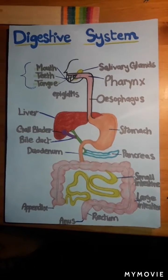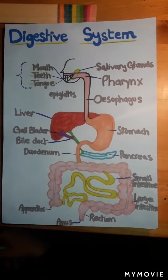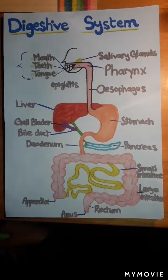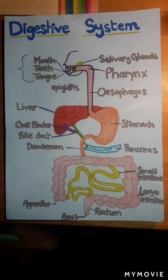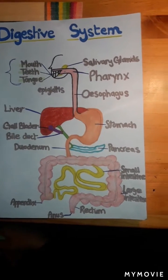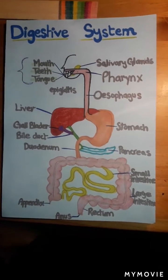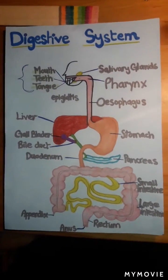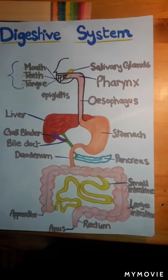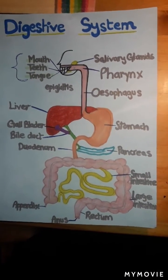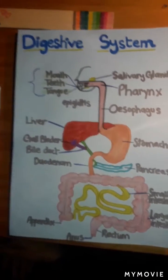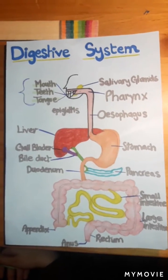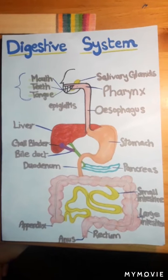In this video I'm going to be teaching you the digestive system — the five stages of the digestive system and how it works. Digestion is a process where large food particles are broken down into smaller water-soluble molecules so that they can be absorbed by blood and give energy to different parts of our body.